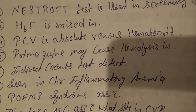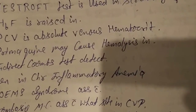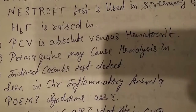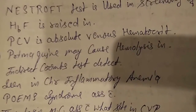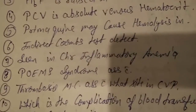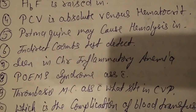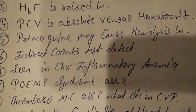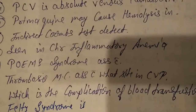In polycythemia vera, the absolute venous hematocrit is 55%. Fifth question: primaquine may cause hemolysis. We use primaquine in malaria, and it causes hemolysis in G6PD deficiency — glucose-6-phosphate dehydrogenase deficiency. Sixth question: indirect Coombs test detects antibodies in serum.